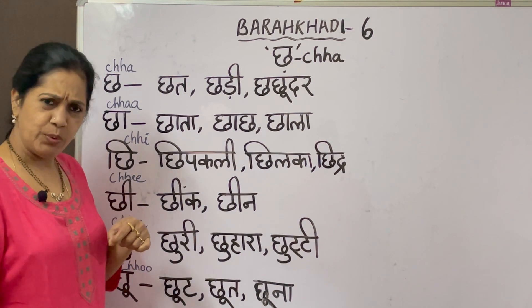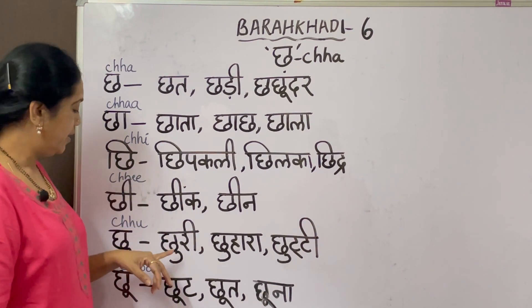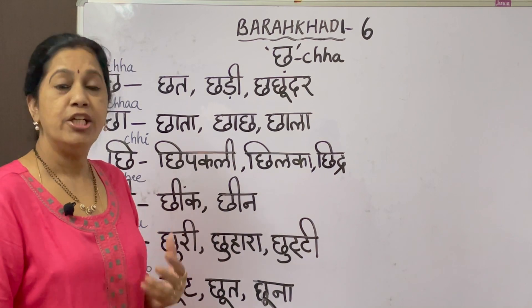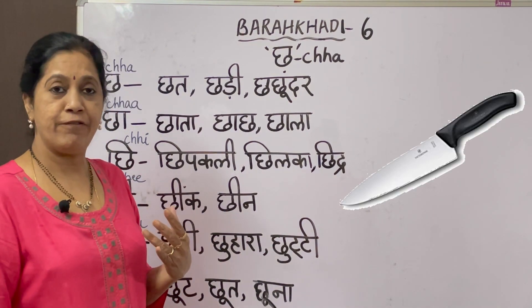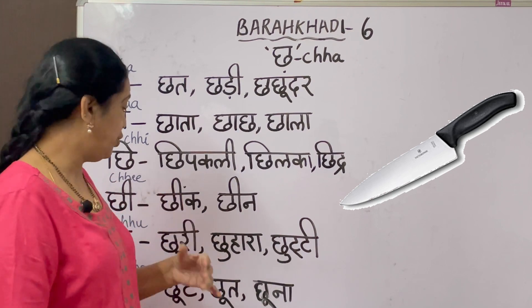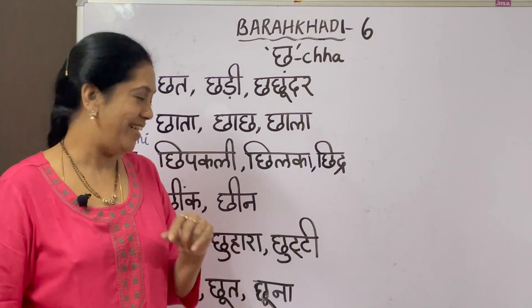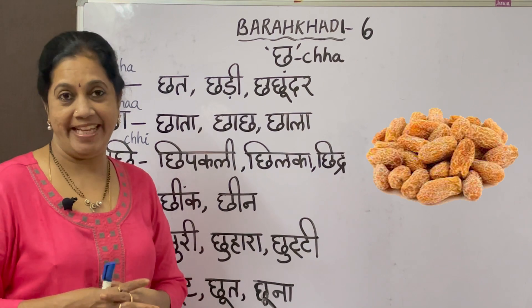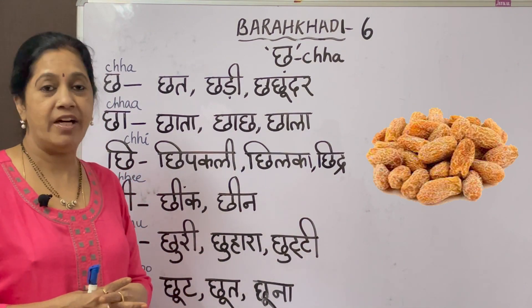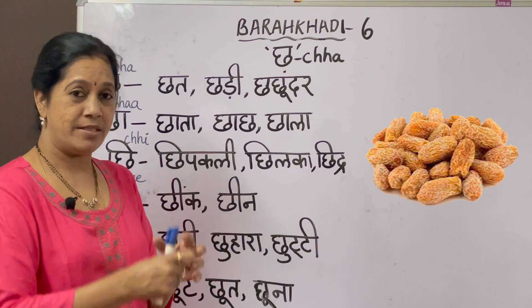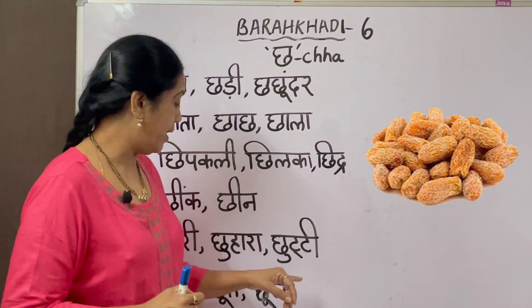The next letter is 'chu.' The word is 'churi' - churi means knife. The next one is 'chuhara' - chuhara means dry dates. Kajur are dates and the dry ones are called chuhara.